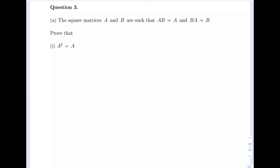Question number three gives us: the square matrices A and B are such that AB is equal to A and BA is equal to B. Prove that A squared is equal to A. Starting with our left hand side.